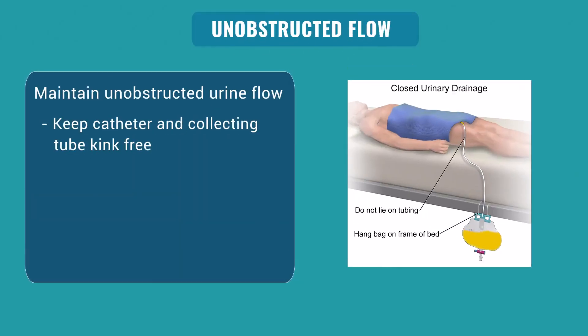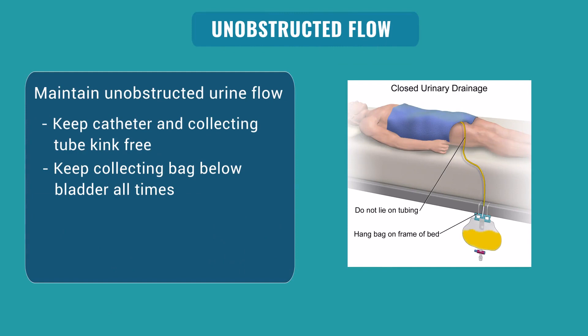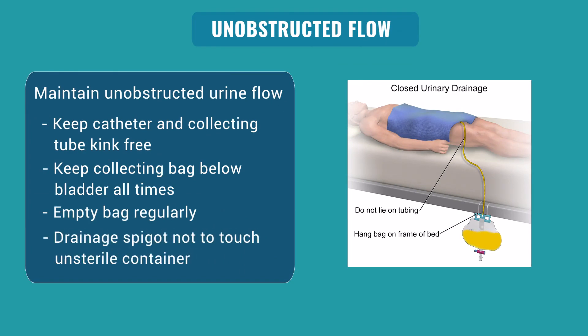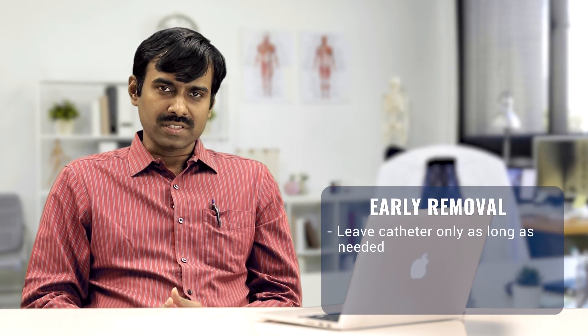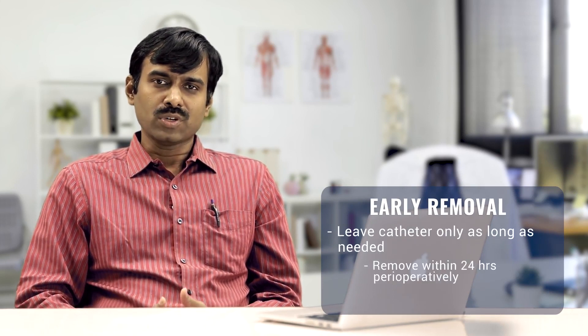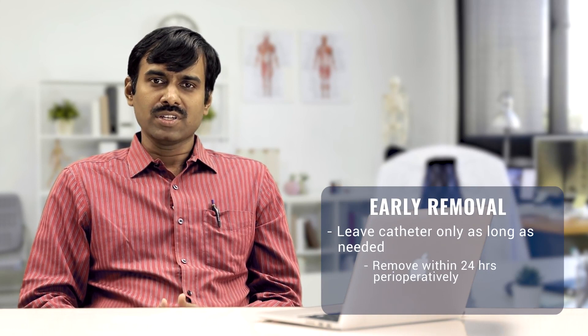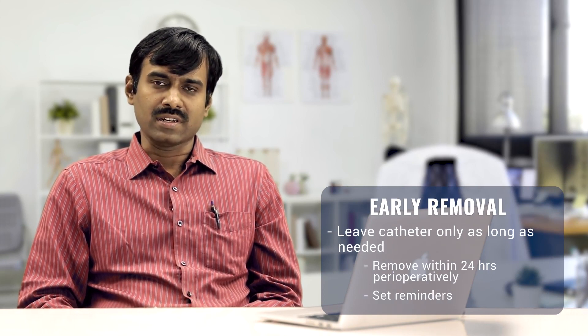Urine stasis favors bacterial growth and infection, so it is essential to maintain unobstructed urine flow. This can be ensured by keeping the catheter and collecting tube kink-free and keeping the collection bag below the bladder at all times, and keeping the bag empty. When emptying the bag, care must be taken not to contaminate the spigot. Duration of catheterization is an important risk factor for CAUTI, so catheters should be removed early. Perioperative catheters should be removed within 24 hours, and reminders should be set to prompt early removal.